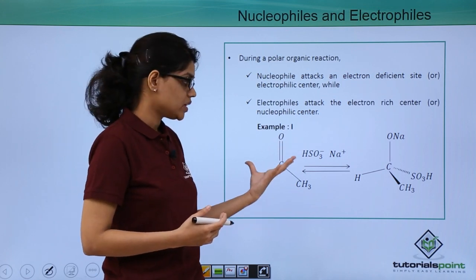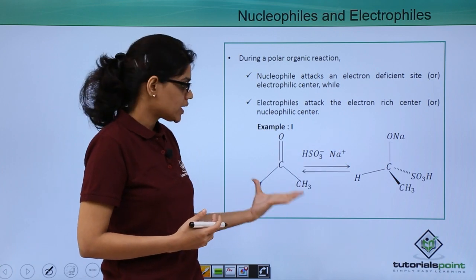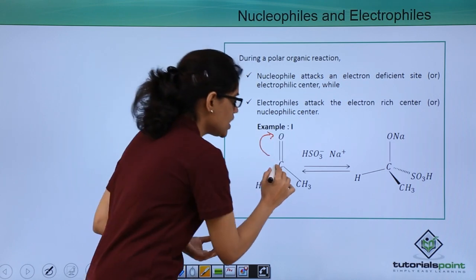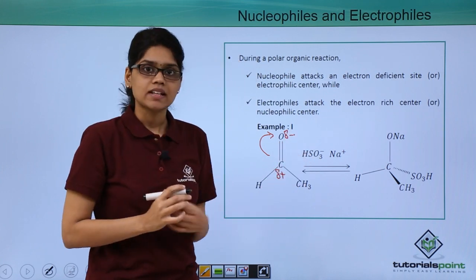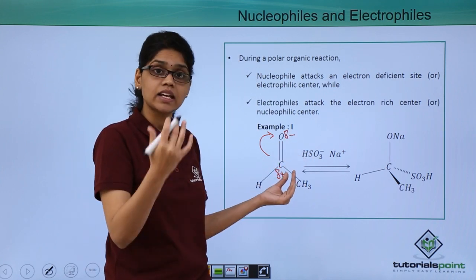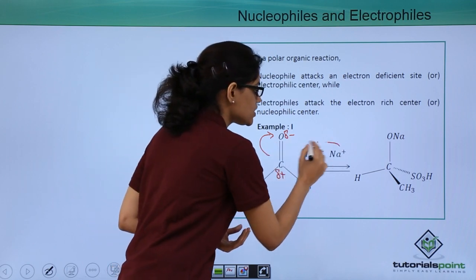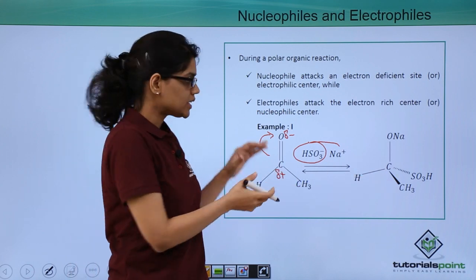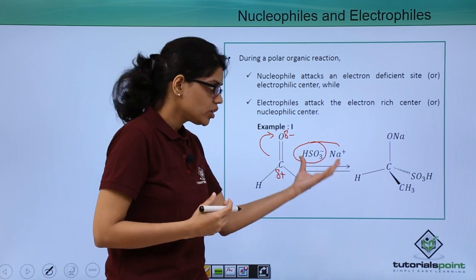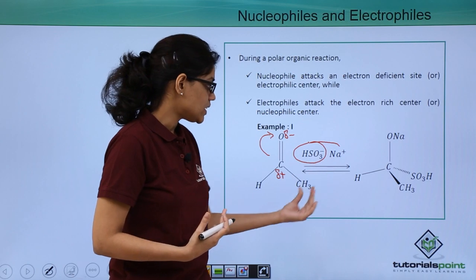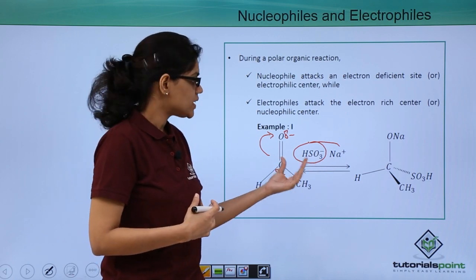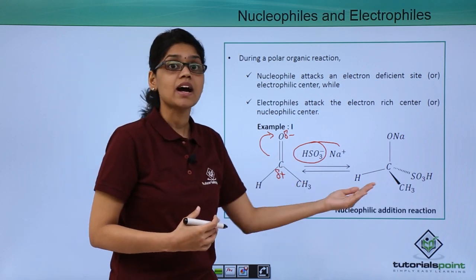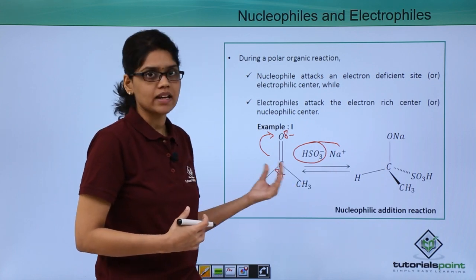Here we have a reactant and an attacking species. Due to the presence of electronegative oxygen, a partial positive charge is developed on the carbon, and a negatively charged species should attack this. That is sodium bisulfite, where HSO₃⁻ attacks this species giving the final product. The nucleophile HSO₃⁻ of sodium bisulfite is attacking an electrophilic center and adding to the original reactant — making this an example of a nucleophilic addition reaction.